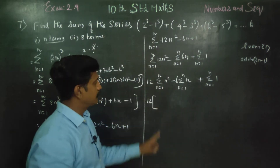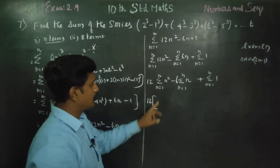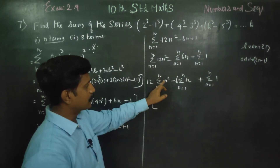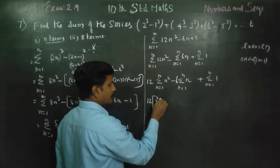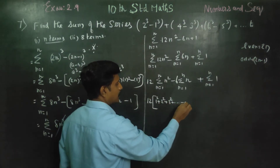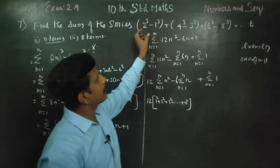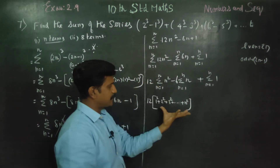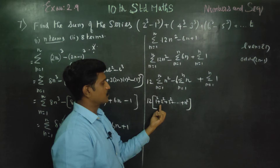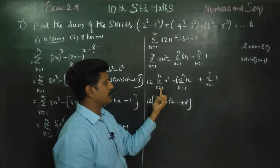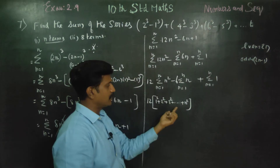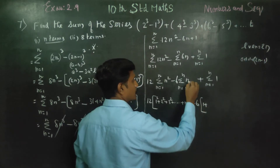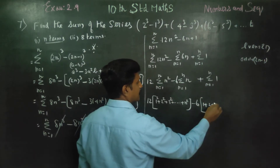What I am saying is: sigma n equals 1 to n of n squared means 1 squared plus 2 squared plus 3 squared plus ... plus n squared. If we have the answer for this series 1 squared plus 2 squared plus 3 squared up to n squared, we can use the standard formula.